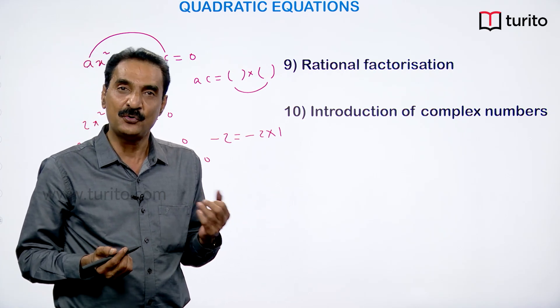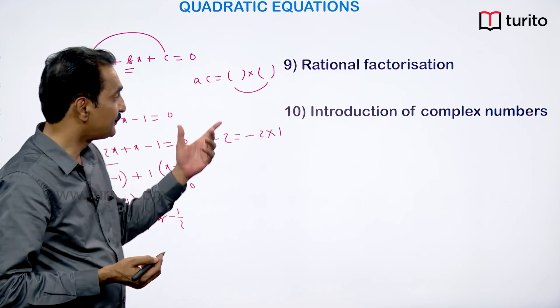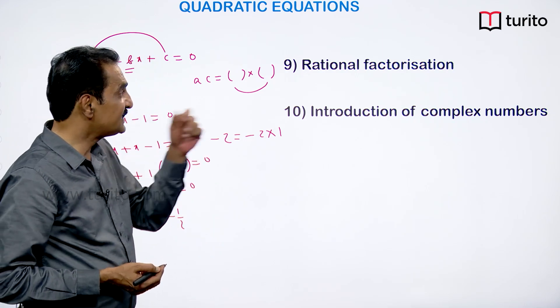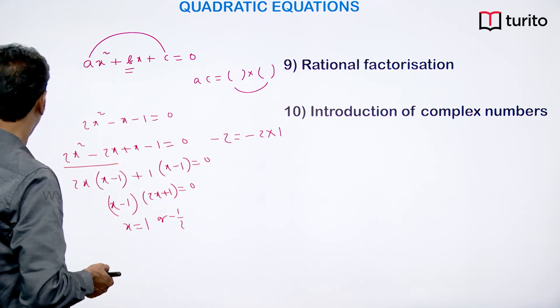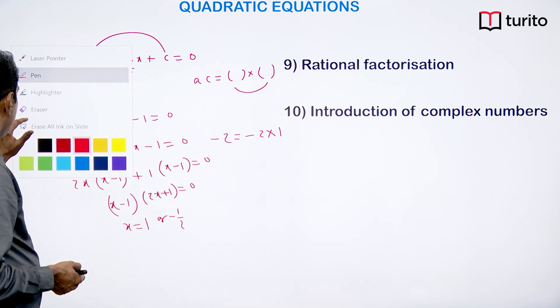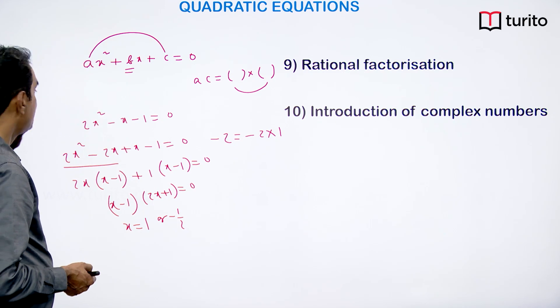If the roots are rational, the factorization method works quickly; otherwise, use the formula (−b ± √Δ) / 2a.